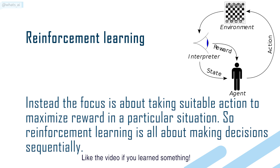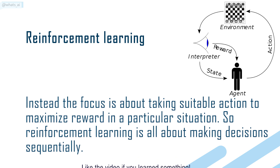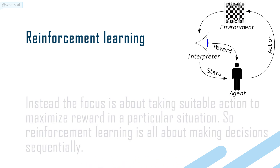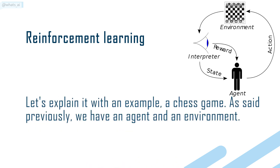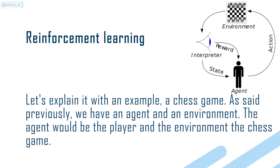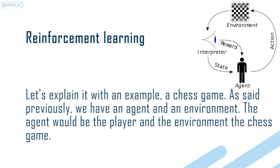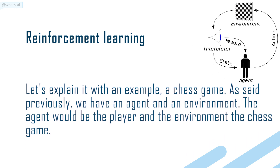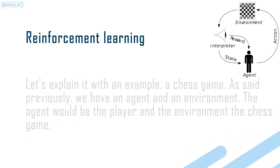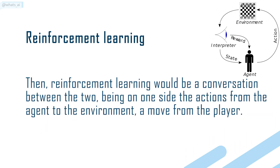Reinforcement learning is all about making decisions sequentially. Let's explain it with an example: a chess game. We have an agent and an environment. The agent would be the player and the environment the chess game.